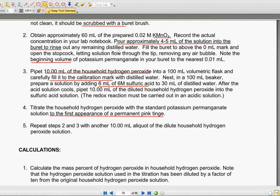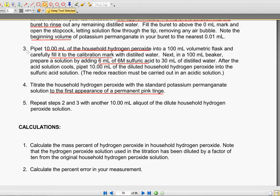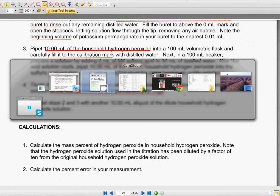Just to kind of clean out the flask and then empty that out. And then you're going to fill it above the zero milliliter mark. We're then going to pipette some household hydrogen peroxide into it slowly until we get some sort of reaction. The first appearance of a permanent pink tinge.